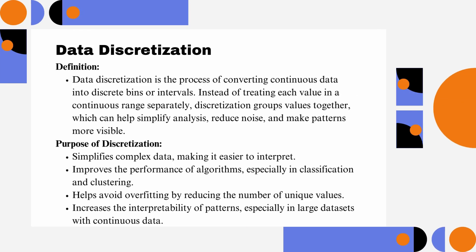Data Discretization. Data Discretization is the process of converting continuous data into discrete bins or intervals. Instead of treating each value in a continuous range separately, discretization groups values together, which can help simplify analysis, reduce noise, and make patterns more visible.